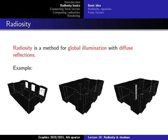We want a better mathematical model to calculate global illumination. One very popular approach is called radiosity. To explain the basic idea, consider a simple example: a room with three windows. Inside the room there are two pillars. The question is how the light from outside falls into the room and lights it.